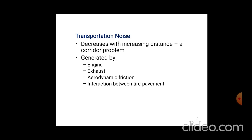Now, transportation noise decreases with increasing distance — corridor problems. During transportation, noise is generated by: first, the engine; second, the exhaust; third, aerodynamic friction; and fourth, the interaction between tyre movements. These are the four parameters or areas where transportation noise is created.